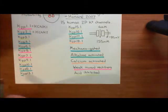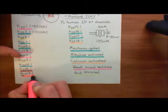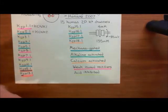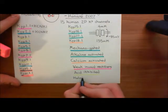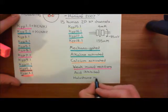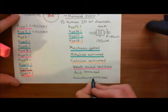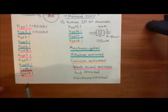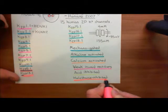Finally, K2P12.1 and K2P13.1, which I tried to say were alkaline-activated, are actually halothane-inhibited. They're believed to potentially be how general anesthetics work - or at least how halothane works. Because if you inhibit these channels, it may well lead to a depolarizing block of the cell membrane. So these are halothane-inhibited.